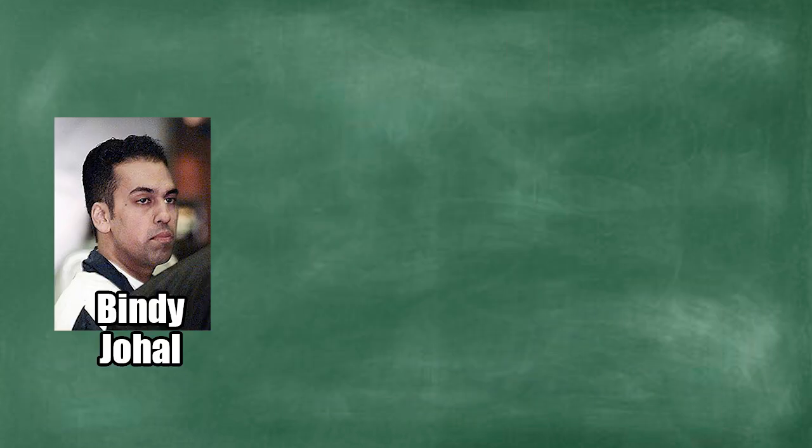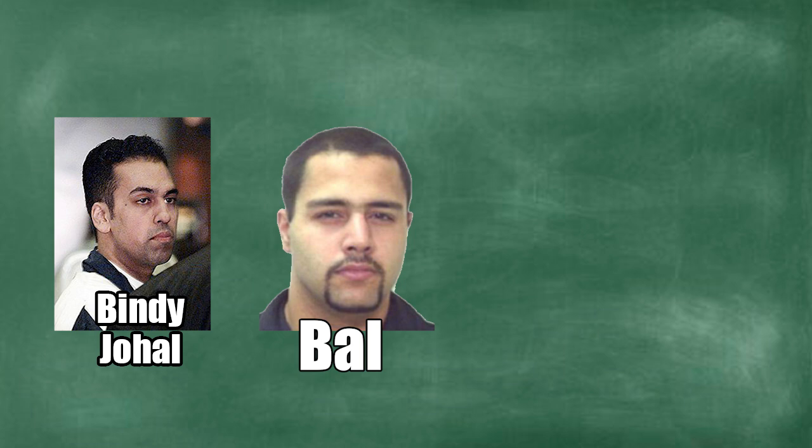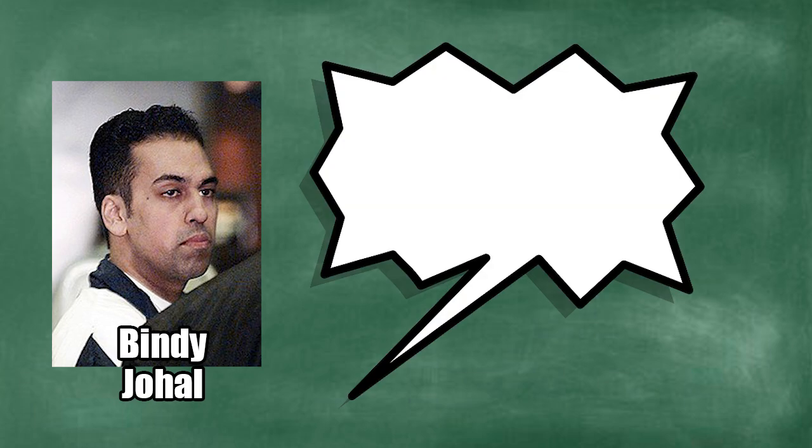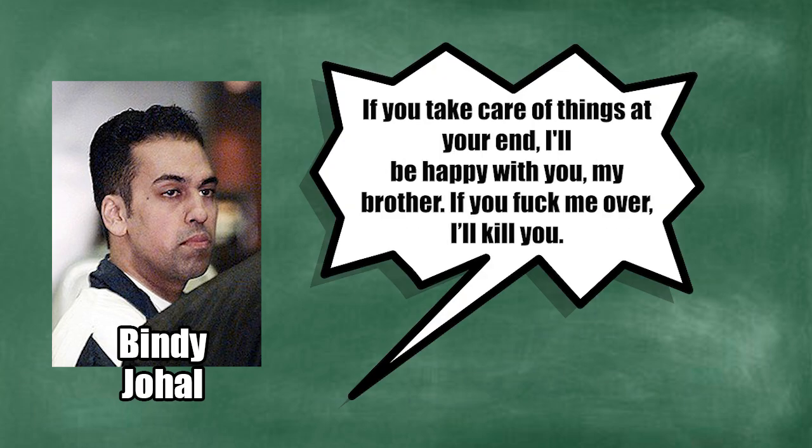At the time, Bindi was among the top local names in Vancouver's crime scene. He took Bal into his growing empire and he eventually became Bindi's loyal lieutenant. Bindi had said to Bal, You're going to be the one underneath me. You listen to me. If you take care of things at your end, I'll be happy with you, my brother. If you fuck me over, I'll kill you.